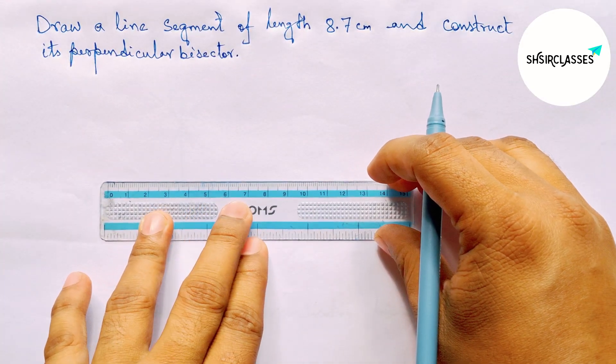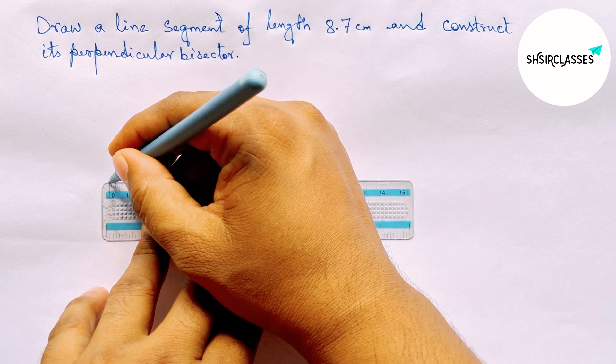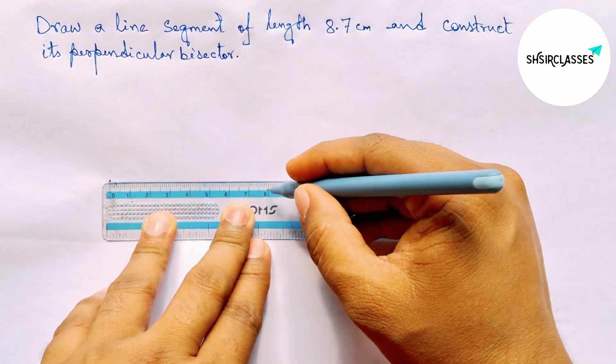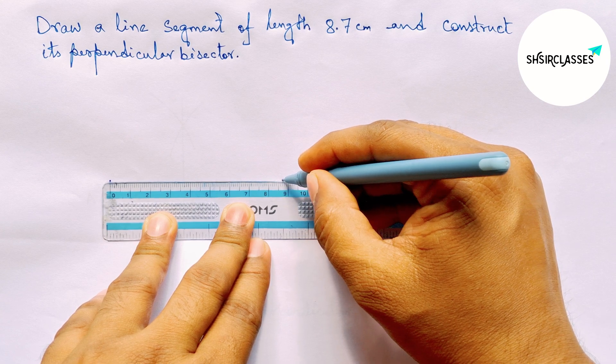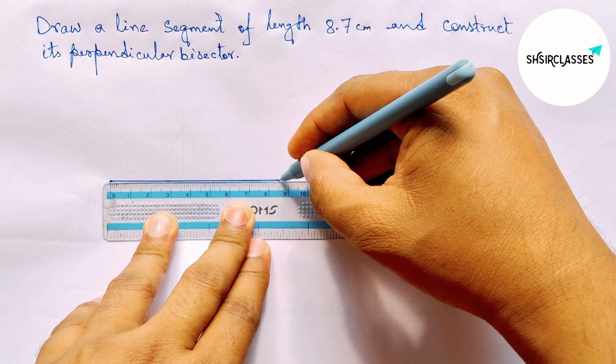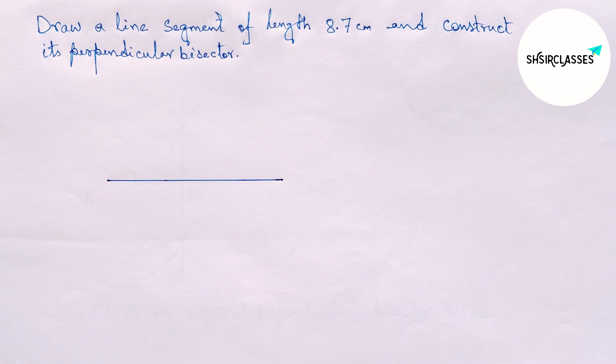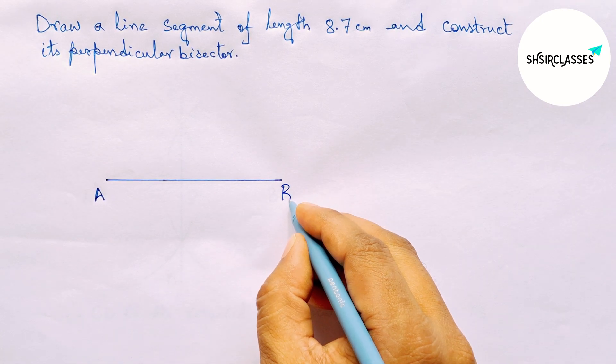First of all, let us draw a line segment of length 8.7 cm. Starting at 0, here's 8, and this is 8.5, then counting two more. So this is an 8.7 cm line segment. Labeling here A and B.